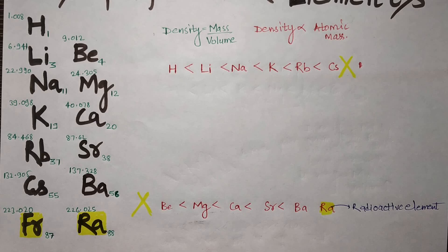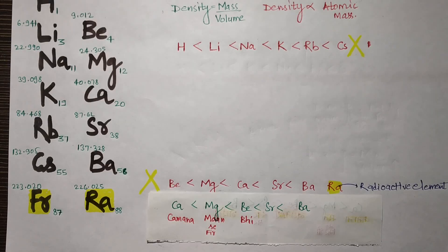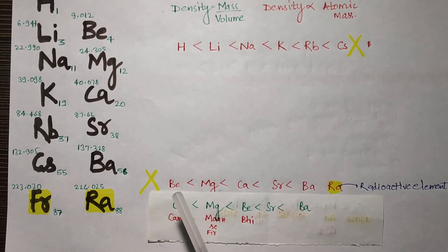What is the trend? Let's see by trick. The normal trend was beryllium density less than magnesium, less than calcium, less than strontium, less than barium. Radium is a radioactive element, so we don't include it. But the density is actually different.